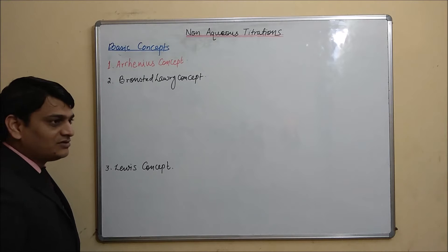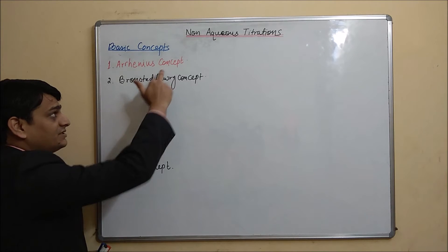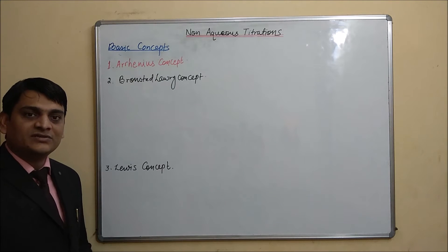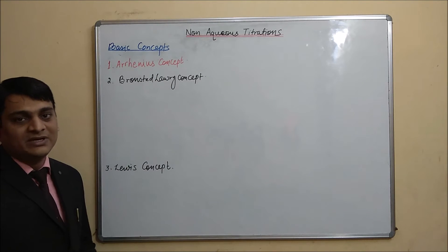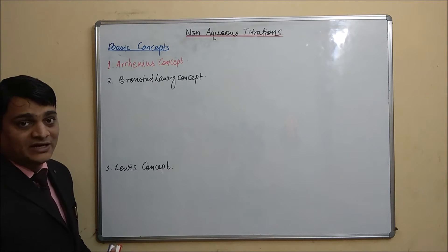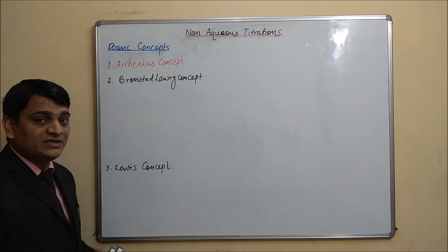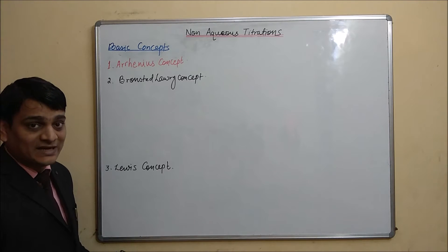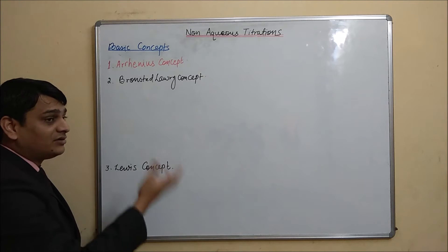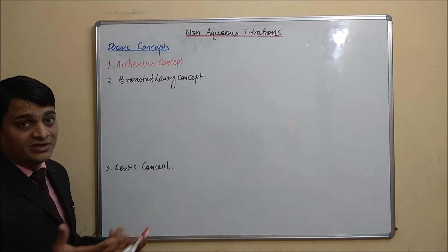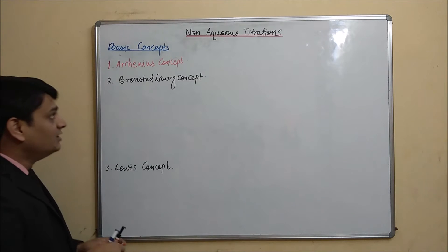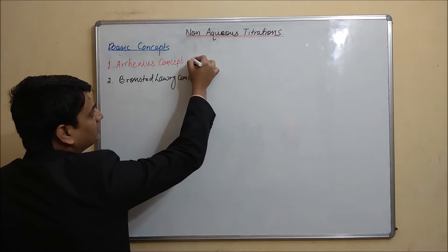The first one is the Arrhenius concept. As you know, the Arrhenius concept is only applicable in aqueous solution because acid will give H⁺ ions and base will give OH⁻ ions. So here in non-aqueous titration, water will not be used as a solvent, so this concept is not applicable.